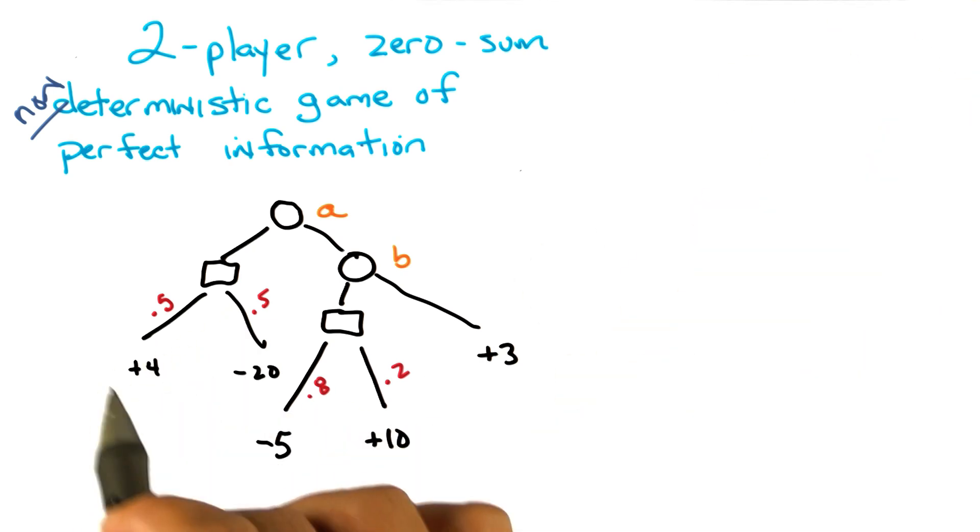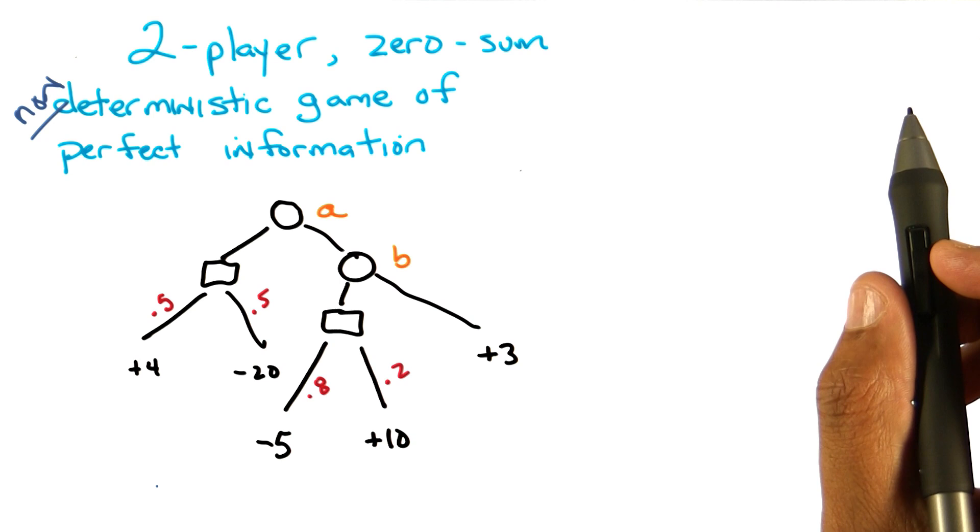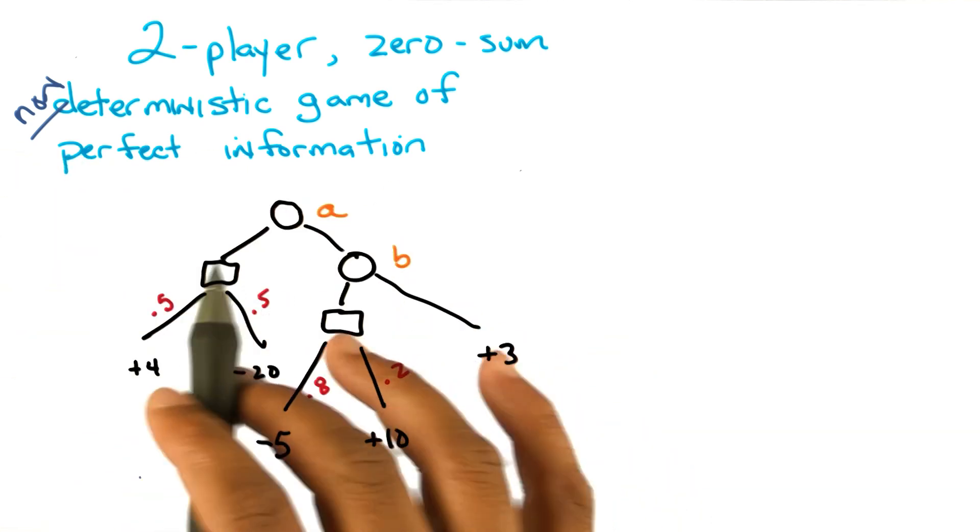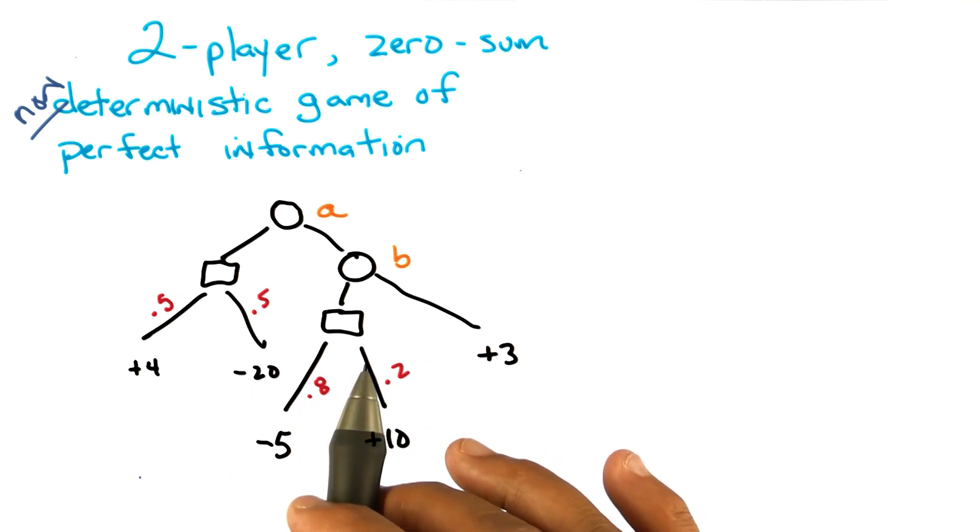No, that's right. There could be after here you end up in a different state where you can then make more choices. But because I don't have enough room and because I want to make it simple, it just sort of ends after that. Okay. But yes, this tree could keep going on and there could be choice, random choices, chance nodes happening everywhere. There could have been a chance node that happened at the very beginning even.